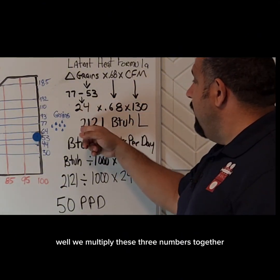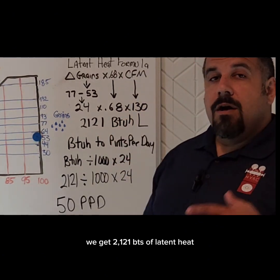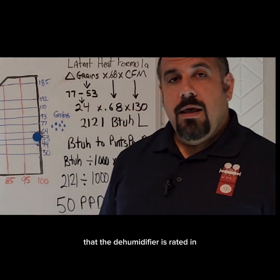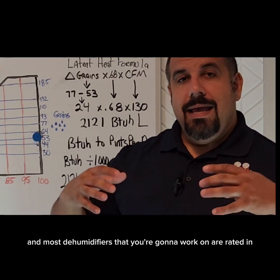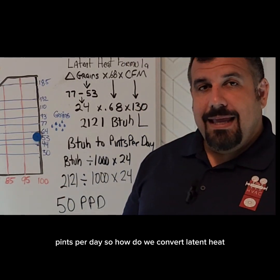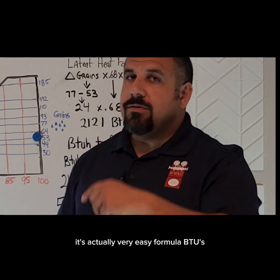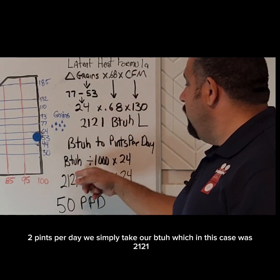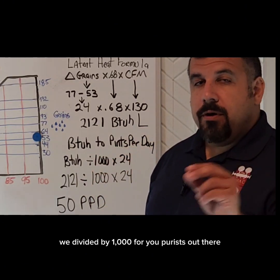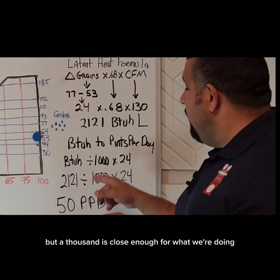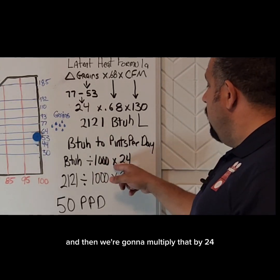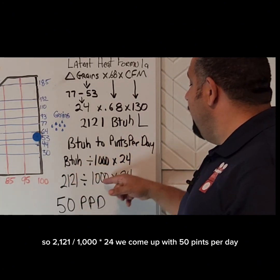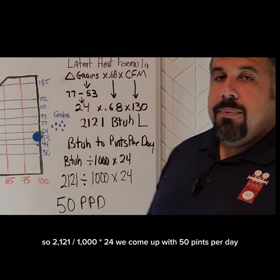When we multiply those three numbers together, we get 2,121 BTUs of latent heat. That does not do us a lot of good unless we're able to convert that to something the dehumidifier is rated in. Most dehumidifiers you're going to work on are rated in pints per day. To convert latent BTUs to pints per day, we simply take our BTUH — which in this case was 2,121 — divide it by 1,000 (for purists it's around 1,054, but 1,000 is close enough), and multiply by 24 because there are 24 hours in a day. So 2,121 divided by 1,000 times 24 gives us 50 pints per day.